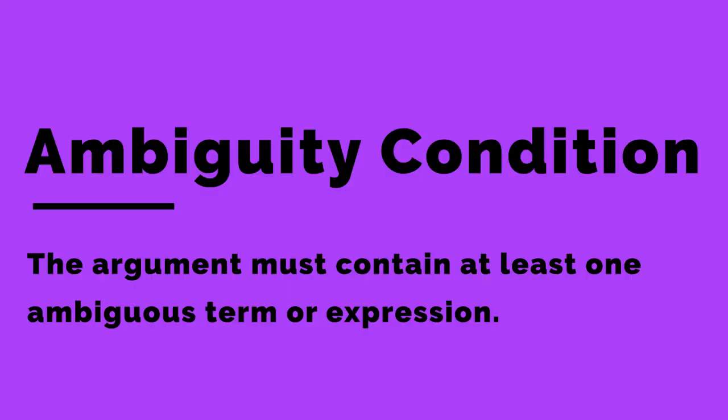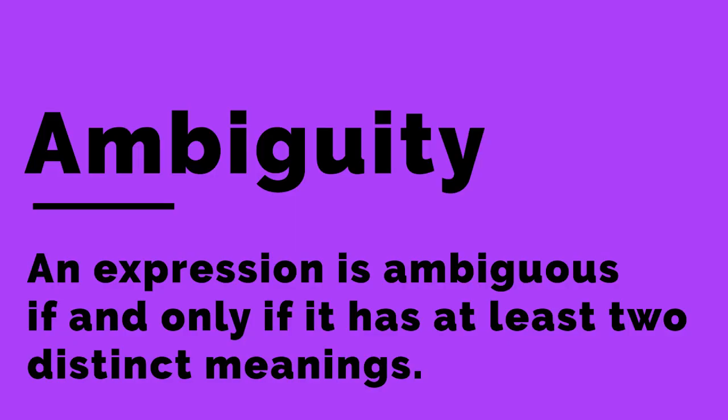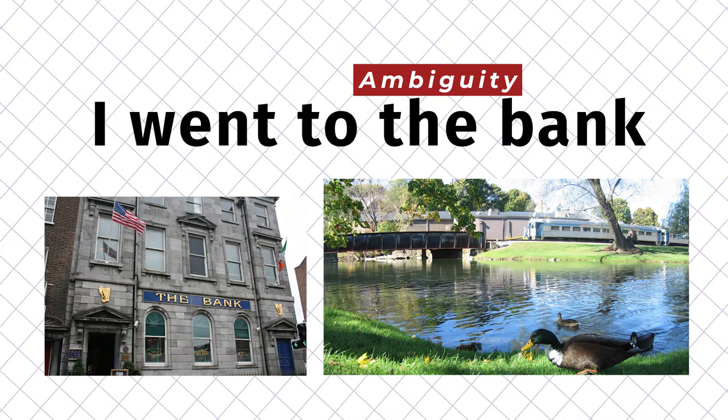The ambiguity condition is obvious: you can only commit the equivocation fallacy if there's actually an ambiguity in the argument itself. We say an expression is ambiguous provided it has at least two distinct meanings. For example, if I tell you I went to the bank, the term 'bank' is ambiguous — you don't know if I dropped some money off at a financial institution or if I sat down by the river and ate a sandwich.